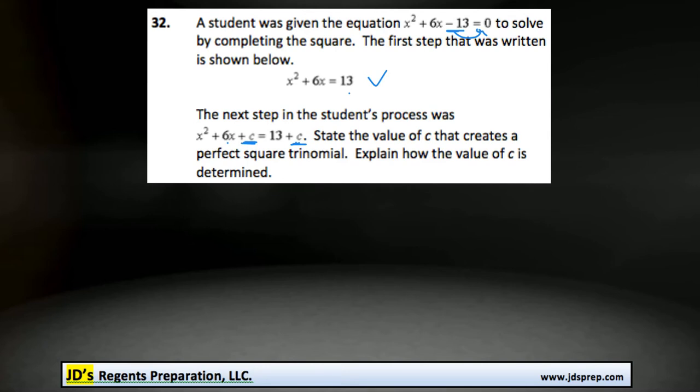State the value of c that creates a perfect square trinomial and explain how the value of c is determined. Now, so just a quick recap,